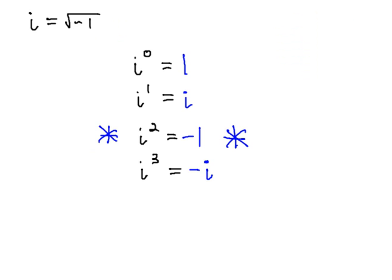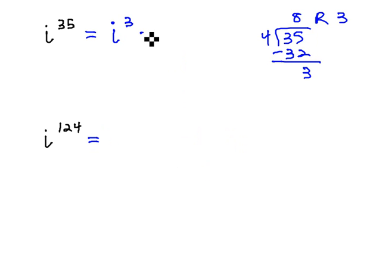And we saw on that previous page that i to the third is negative i. This means i to the thirty-fifth is also negative i.